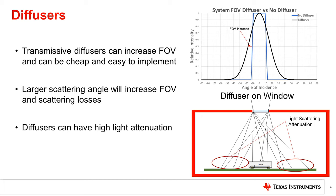In addition to scattering losses, transmissive diffusers will also attenuate the transmitted light. Using a simple film diffuser can work to expand the field of view at a low price but can have light attenuation around 60% before scattering losses are considered. Fresnel type diffusers can be thin like film diffusers and can have attenuation in the 10% range but at a significant increase in per unit price. If light attenuation and its lowered sensitivity are designed for, a simple film diffuser can be sufficient for systems with a very narrow field of view. Compensation and calibration for this type of attenuation are discussed in the next chapter of this series.